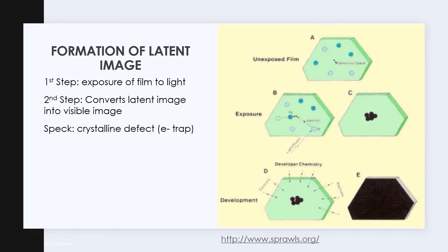Now let us talk about the formation of the latent image. The figure on the right is from sprawls.org that shows the sequence of events that convert a transparent film grain into black metallic silver. Film density is produced by converting silver ions into metallic silver wherein grain becomes black.